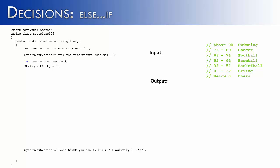So if the temperature is above 90, we want to suggest swimming. If it's 75 to 89, we want to suggest soccer, 65 to 74, football, so on and so forth. And then we're going to use the string activity to assign what activity we think the user should try.